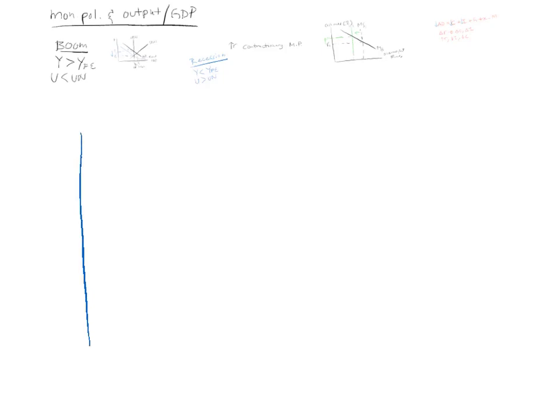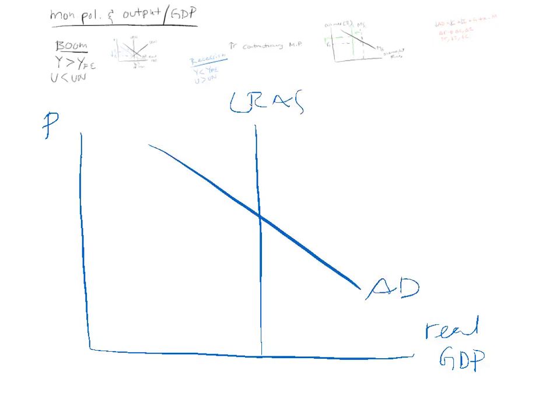You can draw a graph. Real GDP. Price level. Long run aggregate supply. Aggregate demand. Short run aggregate supply. Y1, YFE.